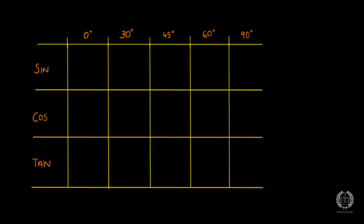So, you don't have to have sine, cos, tan in any particular order — it doesn't matter. We have 0, 30, 45, 60, 90 across the top. What I'm going to do straight away is start with the numbers 0, 1, 2, 3 and 4, and then divide each of these numbers by 4.